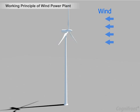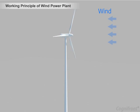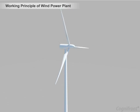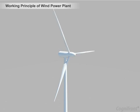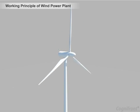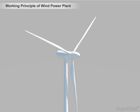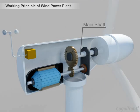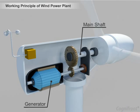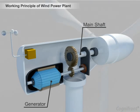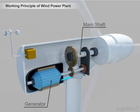The wind will cause the blades to rotate. Due to this the rotor starts moving. As the rotor is connected to the main shaft, it spins the generator, because of which electricity is produced.